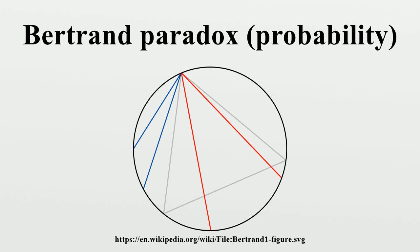It can be seen that there would be a change for Method 3 — the chord distribution on the smaller circle looks qualitatively different from that on the larger circle. The same occurs for Method 1, though it is harder to see graphically. Method 2 is the only one that is both scale invariant and translation invariant. Method 3 is only scale invariant, and Method 1 is neither.